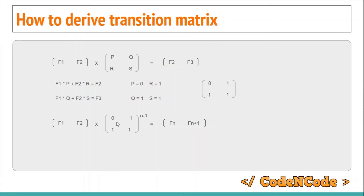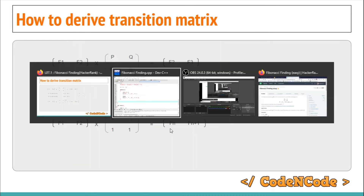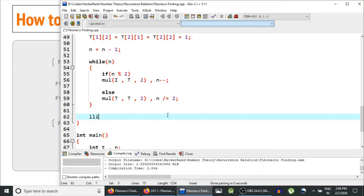Now we take the first element and multiply: x = ar[1] * i[1][1] + ar[2] * i[2][1], which gives the nth term.